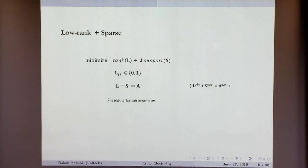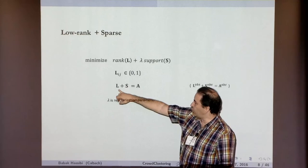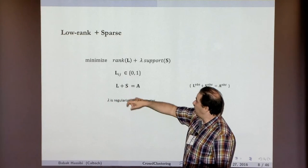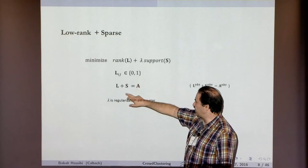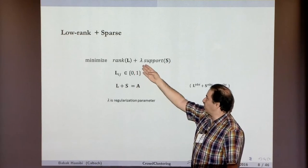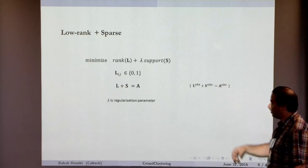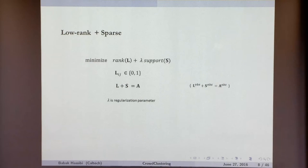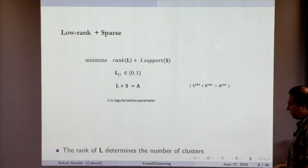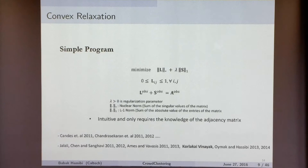So the algorithm is: given adjacency matrix A, decompose it into a low-rank component plus a sparse component — L is a zero-one matrix, S is a zero/plus-one/minus-one matrix — and minimize rank(L) plus lambda times support(S). Of course, no one can solve this — it's an integer program. The rank of L determines the number of clusters. Nowadays people want to convexify everything, so we relax rank with the nuclear norm (sum of singular values of L) and sparsity with the L1 norm (sum of absolute values of entries of S). L is relaxed to lie in the interval [0,1].